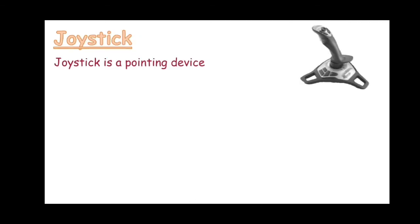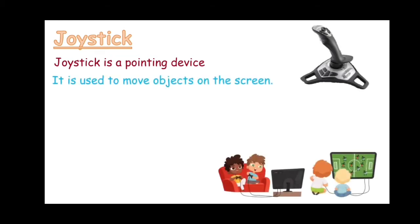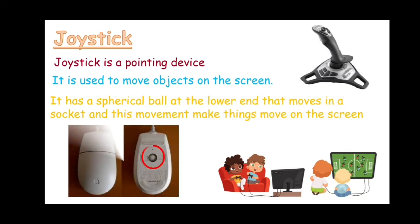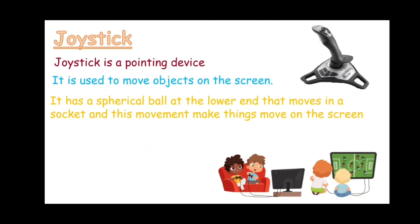Joystick. Just like mouse and trackpad, joystick is also a pointing device. It is used to move objects on the screen. It has a spherical ball at the lower end that moves in a socket, and this movement makes things move on the screen. Remember we discussed about the ball present at the bottom of the mouse which helps to move the cursor. Similarly, a spherical ball is present in a joystick to move things on the screen.